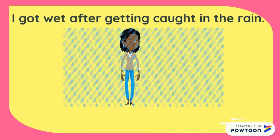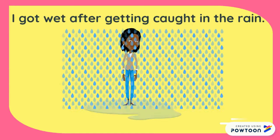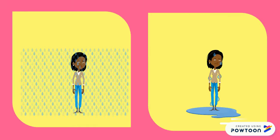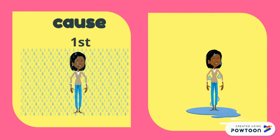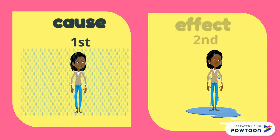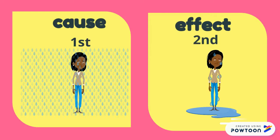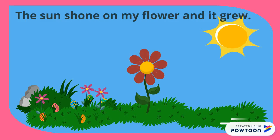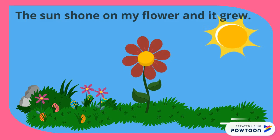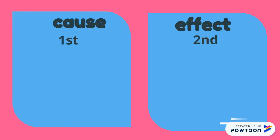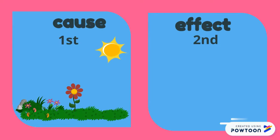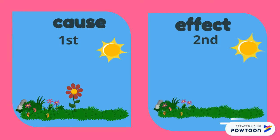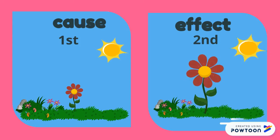For example: I got wet after getting caught in the rain. In this sentence, the rain came down first, which was the cause, and I got wet as a result, which is the effect. Here's another: The sun shone on my flower and it grew. The sun shone on the flower first, which makes it the cause, and as a result the flower grew, which makes it the effect.